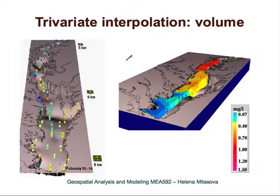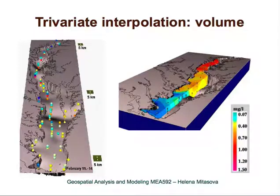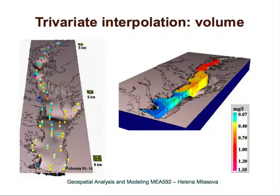These functions are not standard in GIS, but a lot of software for geostatistics or mining applications supports this kind of interpolation, and we also have 3D splines in GRASS. This is what trivariate interpolation can be used for. Here the points are measured in three-dimensional space — this particular example is nitrogen concentrations in the Chesapeake Bay measured at different depths. When interpolated, the output is a three-dimensional grid that can be displayed as cross sections.